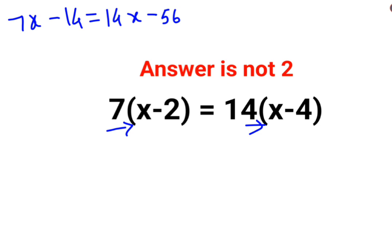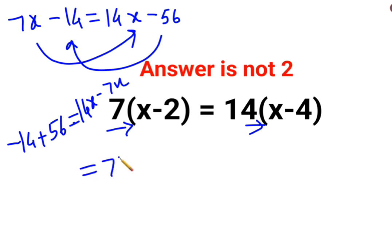Next what we will do is shift the variable on one side and the numbers on another side. So we have minus 14 plus 56 is equal to 14x minus 7x. So this comes out to be 7x.